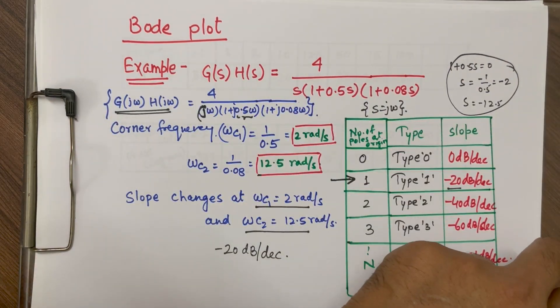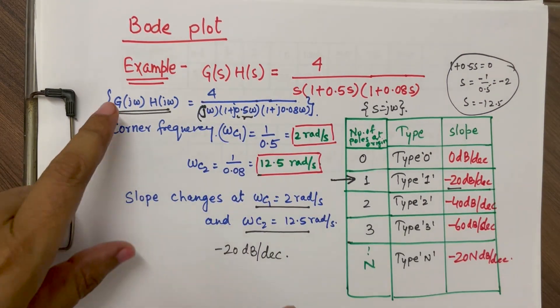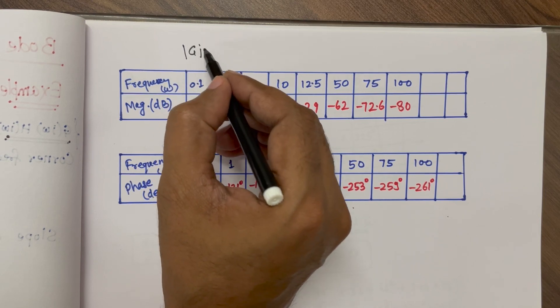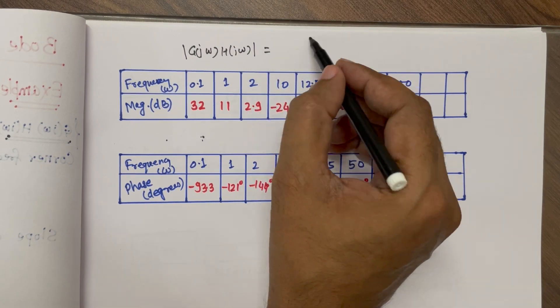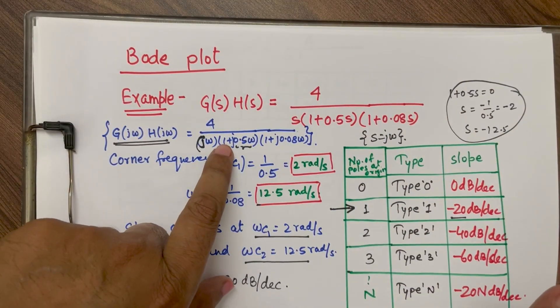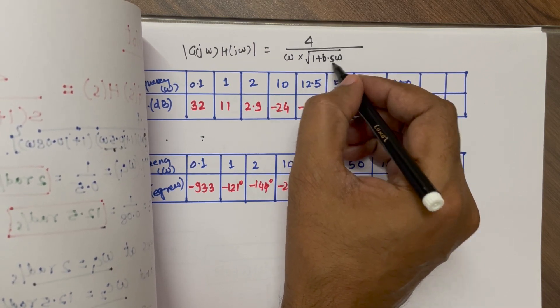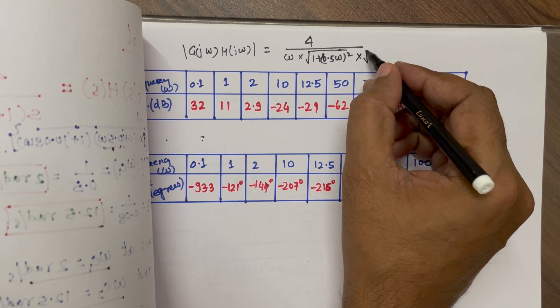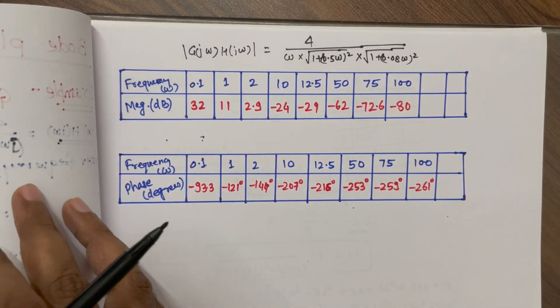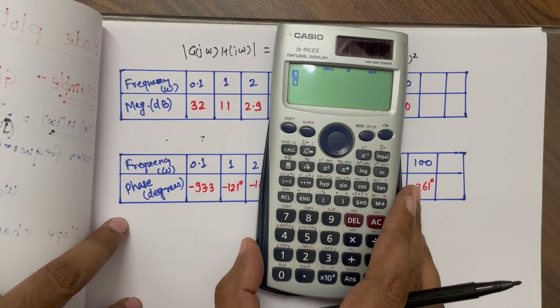Now, for this question, we need to plot the Bode plot. So we are going to find out the magnitude of this function as well as phase of this function. So this is our expression and using this expression, we are going to find out the magnitude. For magnitude, the formula which we are going to use is g j omega h j omega will be 4 divided by magnitude of j omega is omega into magnitude of 1 plus j 0.5 omega, which is a complex number. It will be under root 1 plus 0.5 omega whole square, then into 1 plus 0.08 omega whole square. So using this function in calculator, we can actually find out the magnitude, various magnitude. I will show you in the calculator how to do it.